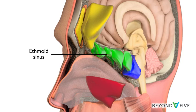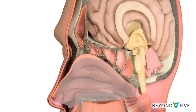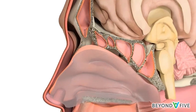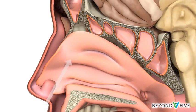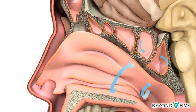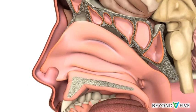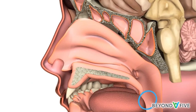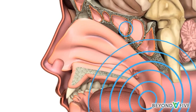The nasal cavity and paranasal sinuses have several important jobs. Firstly, they warm, moisten, and filter the air breathed in through the nose before it travels down into the lungs. They also affect the sound of your voice, giving it resonance.